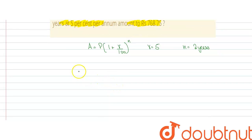So we will get amount is equal to principal into 1 plus 5 divided by 100 to the power 2.